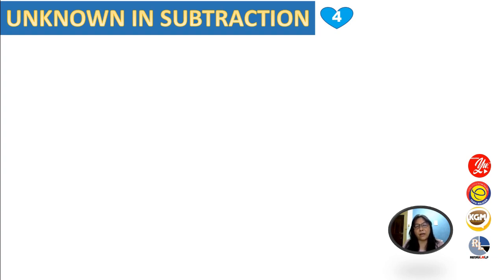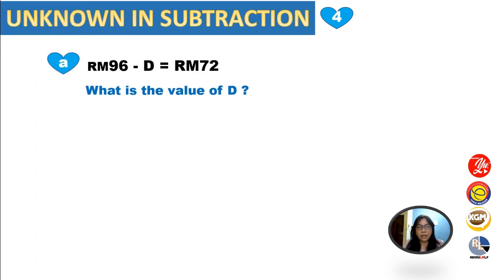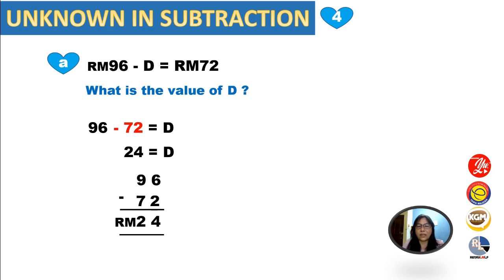Now unknown in subtraction. For example: RM96 minus D equals RM72. D is the unknown. We rearrange: D equals RM96 minus RM72, because bringing 72 to the other side changes minus to plus for that term. So D equals RM24.